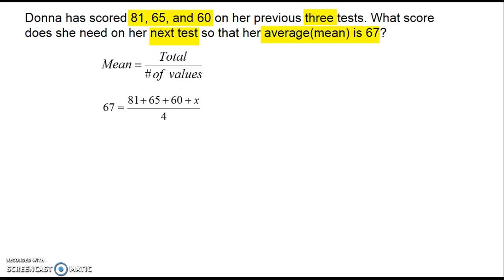Now, fill in the values you know. The mean is 67. The total is calculated by adding together these three scores and including x for the score on her next test. We divide by the number of values, which is 4.